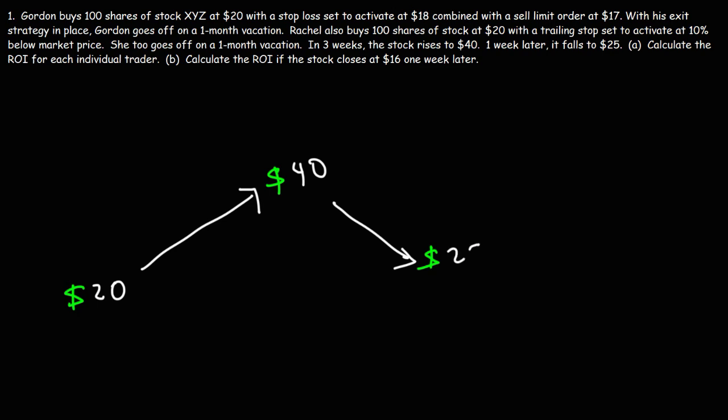Now in the case of Gordon, his stop-loss order is not activated because the stock never reached $18 or below. So assuming that he closes his position at this point, he spent $2,000 buying 100 shares at $20, and then he sold 100 shares at $25. So he's going to receive $2,500 for that. His gain for this particular trade is $500.